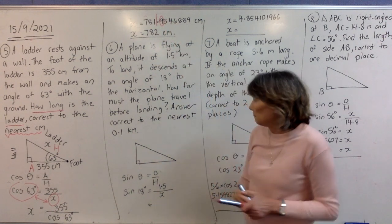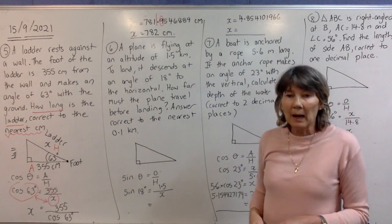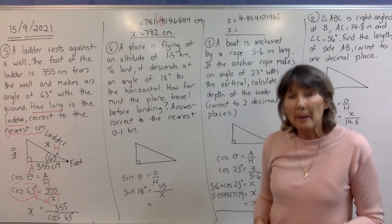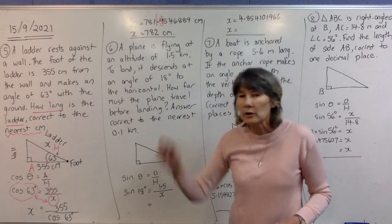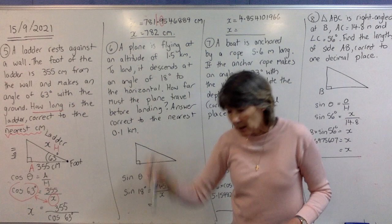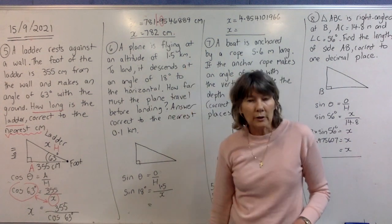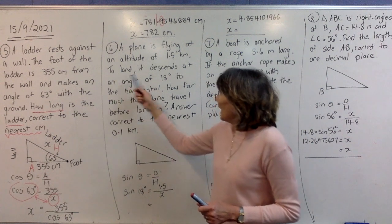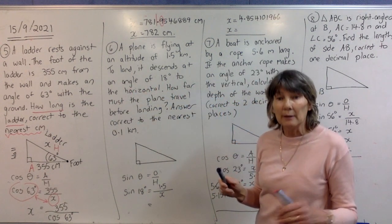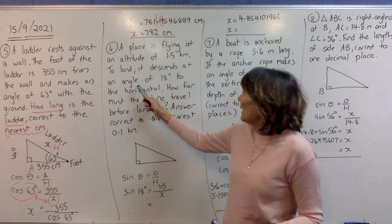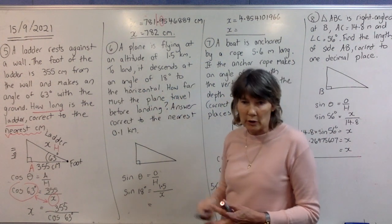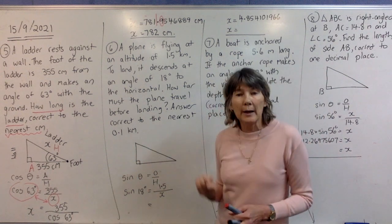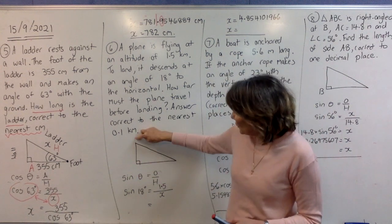Number six: a plane is flying at an altitude of 1.5 kilometers. Altitude means directly from the ground straight up to where the plane is — it's a perpendicular height. To land, it descends — comes down — to the runway at an angle of 18 degrees to the horizontal.